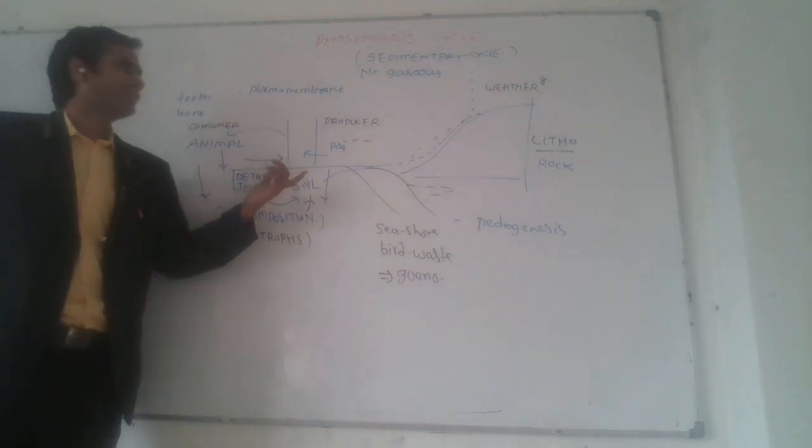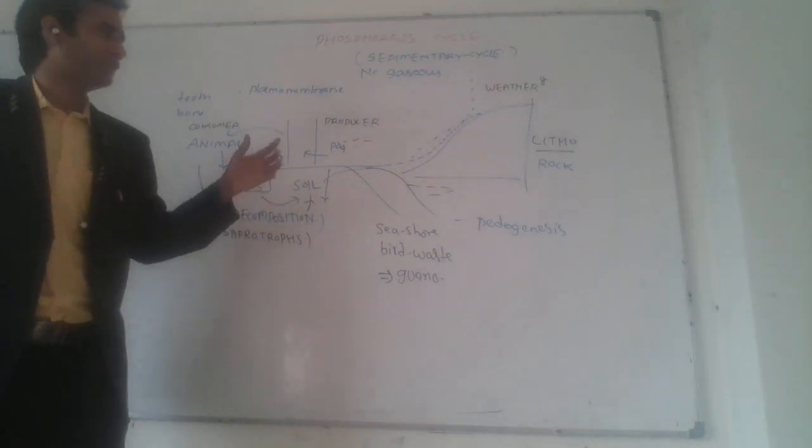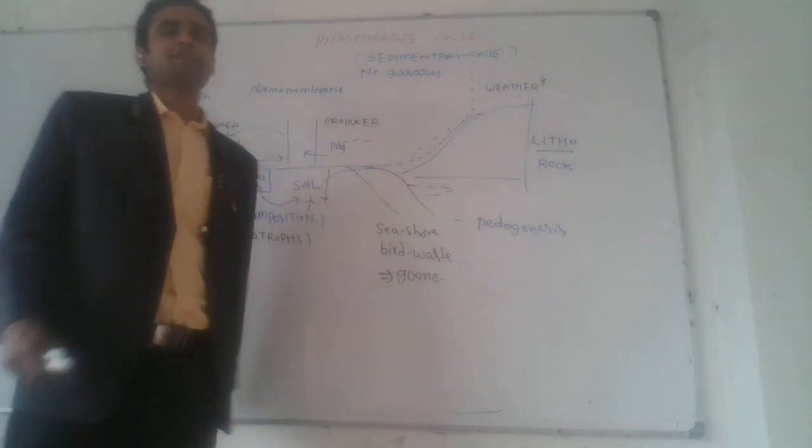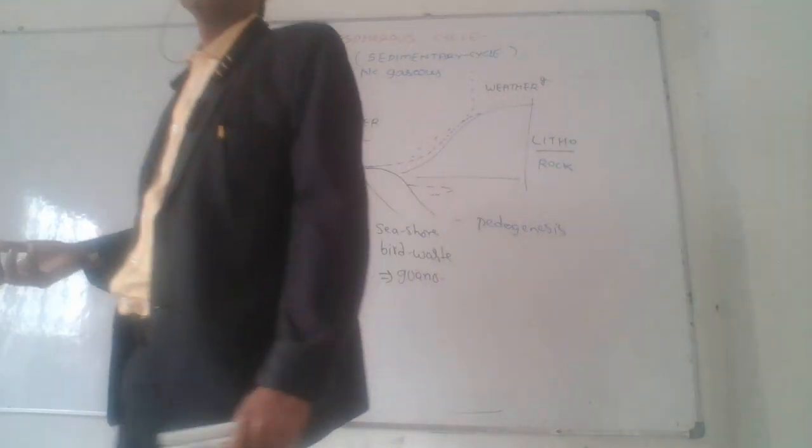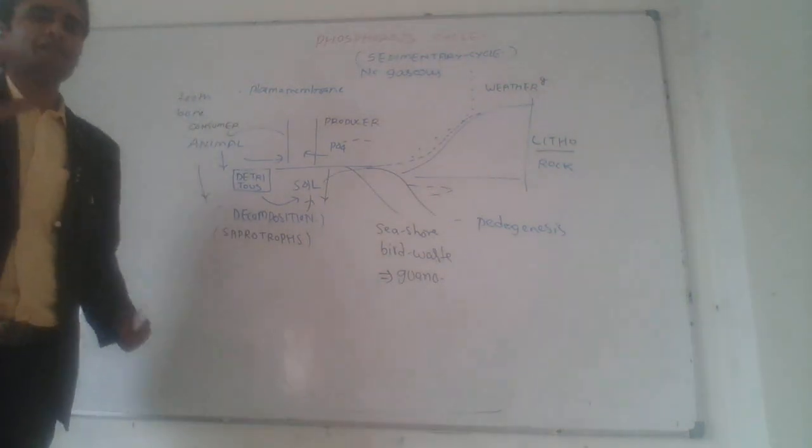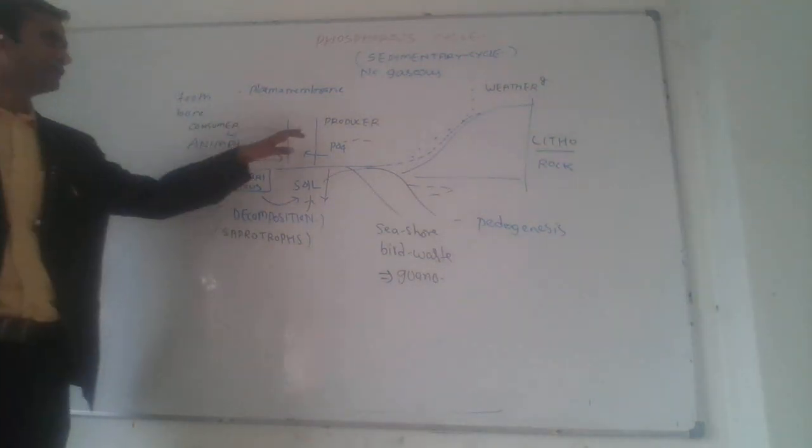From the soil, phosphorus is absorbed in the form of phosphate ion and converted into cell membranes. Nucleic acids like DNA and RNA contain phosphorus, and it is converted into different types of complexes and biomolecules.